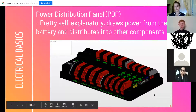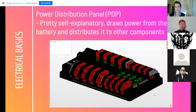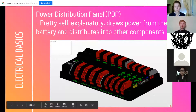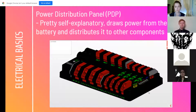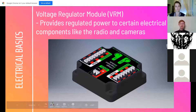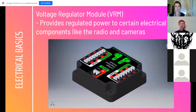The power distribution panel does exactly what its name says: it takes power from the battery and distributes it to all the other components, so you don't have to run a bunch of wires from the battery itself. It allows for wiring of different voltages and resistances. The VRM — voltage regulator module — provides more regulated power to certain components like the radio or cameras that don't need the full power from the battery.